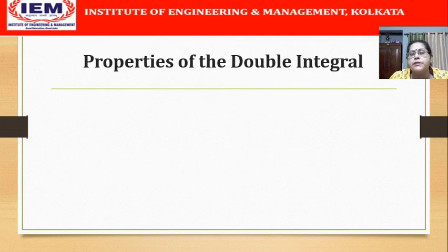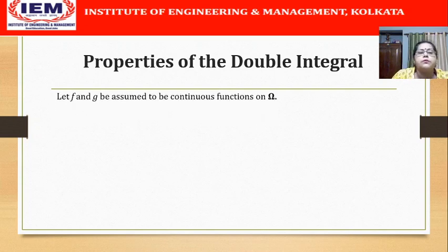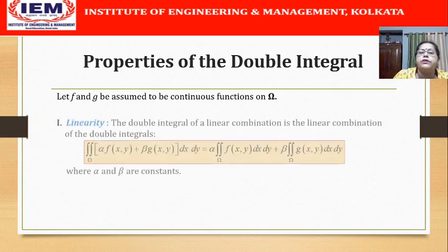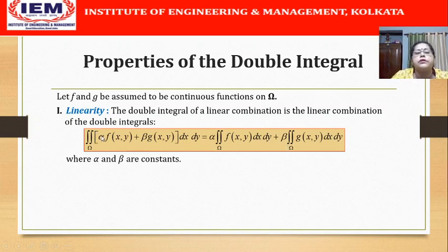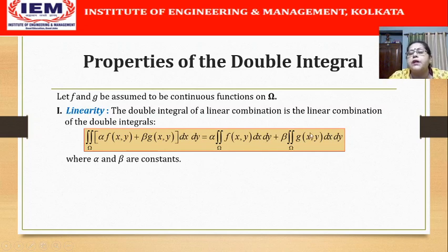Next we will look into the properties, which will be useful when we are actually solving problems. Suppose f and g are two continuous functions on the region omega. The first property is the linearity property, which states that the double integral of a linear combination is the linear combination of the double integrals. The double integral of alpha·f(x,y) + beta·g(x,y) dx dy over omega equals alpha times the double integral of f(x,y) dx dy over omega, plus beta times the double integral of g(x,y) dx dy over omega, where alpha and beta are constants.